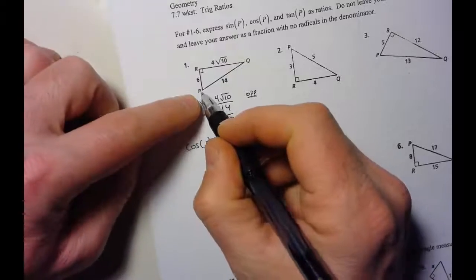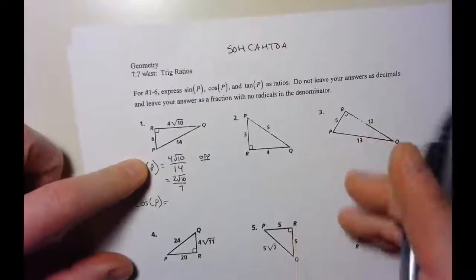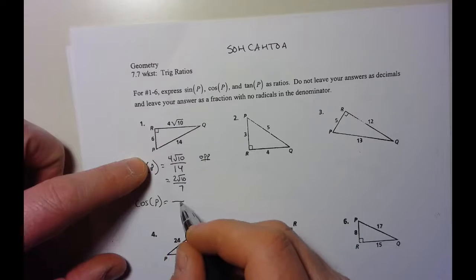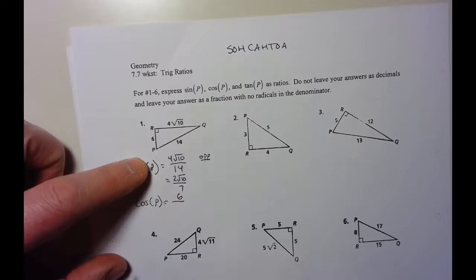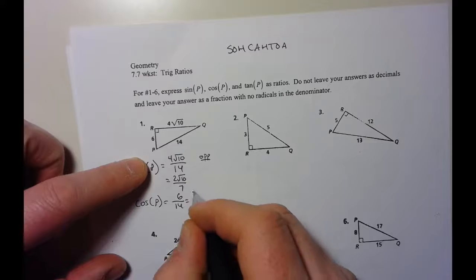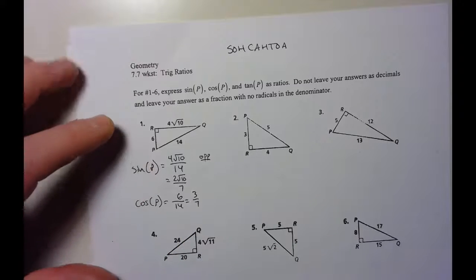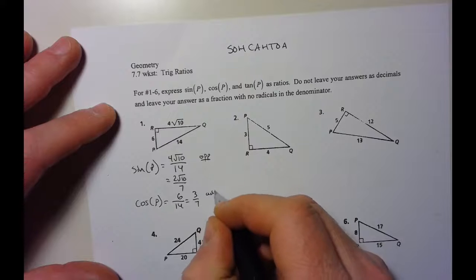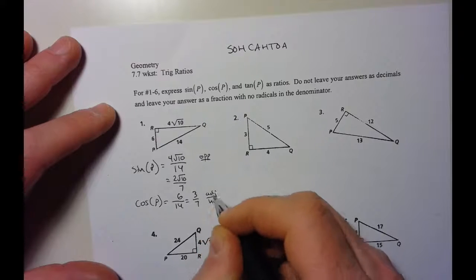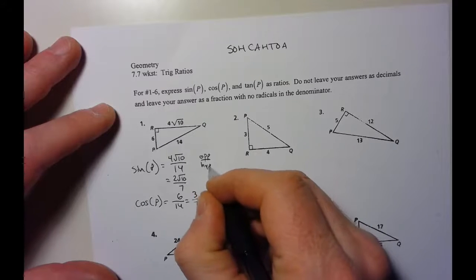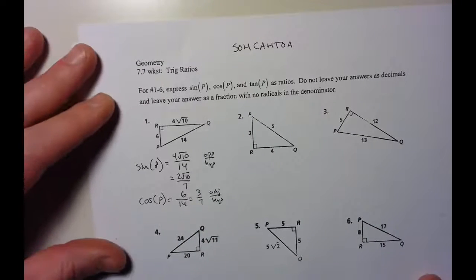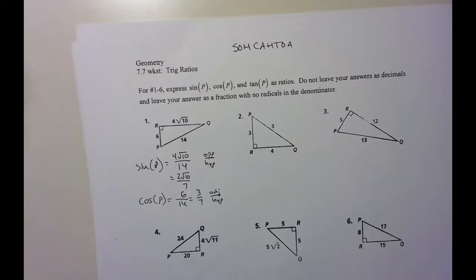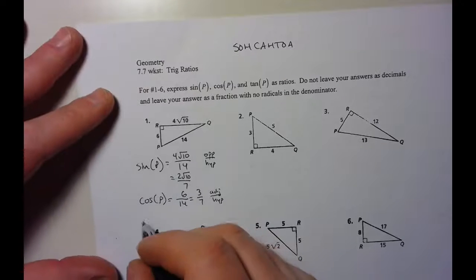For cosine of p, I'm starting at p. Remember cosine is adjacent over hypotenuse. The adjacent side is 6, the hypotenuse — across from the right angle — is 14, so I get 3/7 as my answer. The sine was opposite over hypotenuse, cosine is adjacent over hypotenuse. Once you know the formula, it's pretty straightforward.